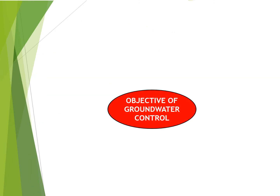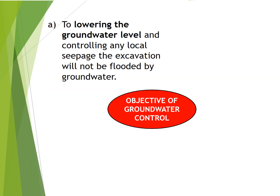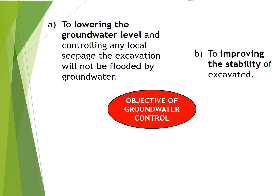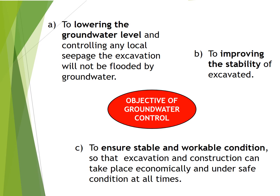Objectives of groundwater control: A — to lower the groundwater level and control any local seepage so the excavation will not be flooded by groundwater. B — to improve the stability of the excavation. C — to ensure stable and workable conditions so that excavation and construction can take place economically and under safe conditions at all times. D — to keep the excavation bottom dry.